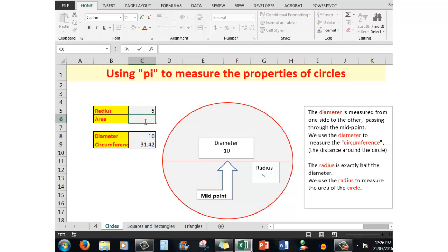The last number is the number of decimal points that I require. So let's delete it and we'll write it again: equal ROUND, open a bracket, pi open and close a bracket, multiplied by what is in C5, raised to the power of 2, comma 2, close the bracket, ctrl enter. And there is the area of my circle: 78.54.